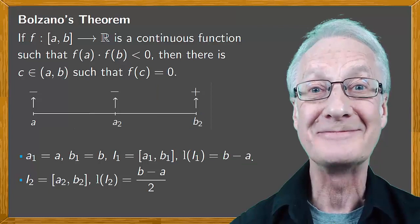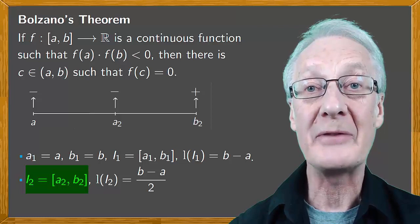In either case we get an interval [a₂, b₂] where the sign of f is different at the ends. At the left end the image is negative and at the right end the image is positive.